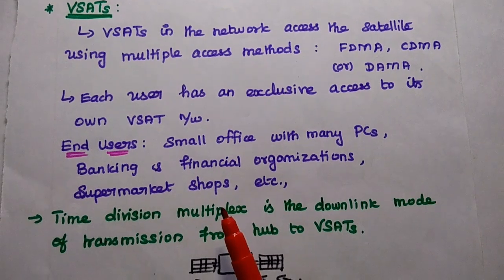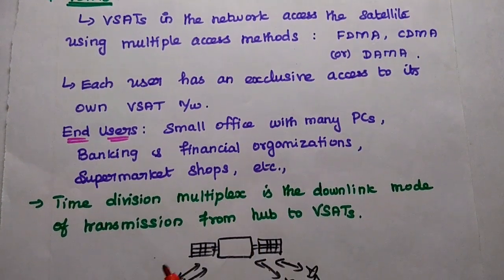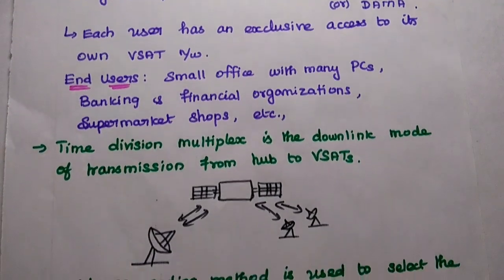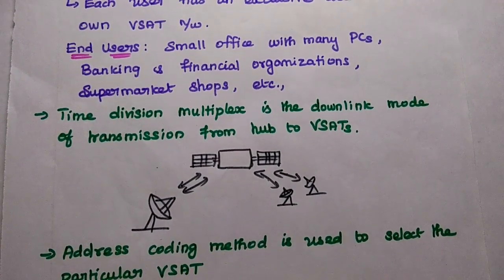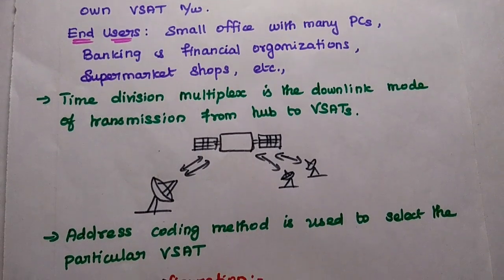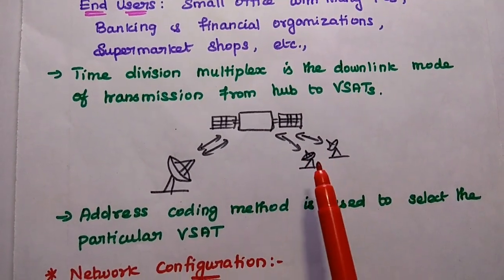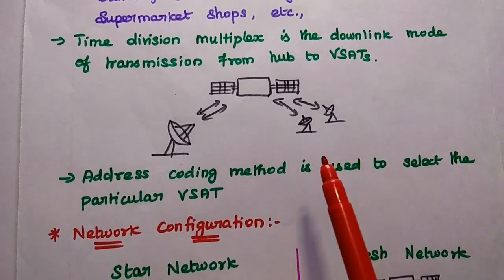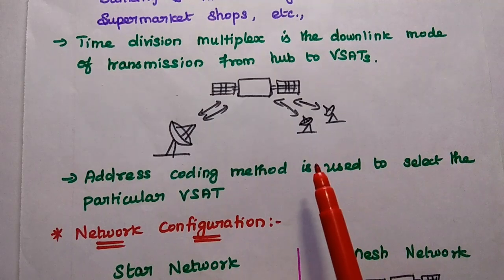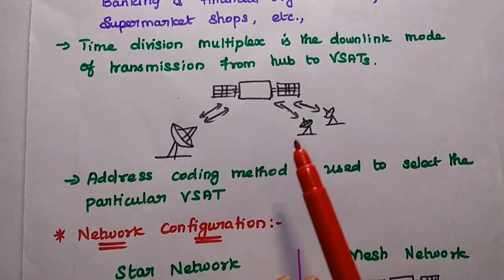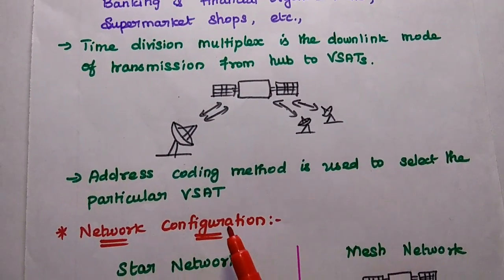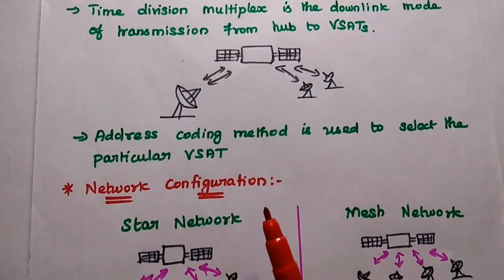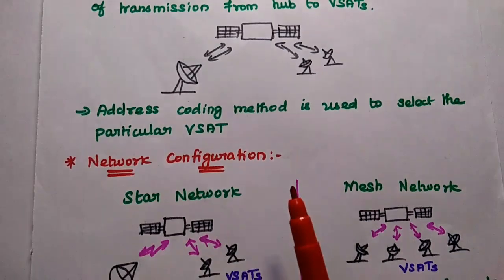End-users may be a small office with many PCs, banking and financial organizations, supermarket shops, and homes seeking satellite TV services. Time division multiplex method is used in the downlink mode to transmit the signal from the Hub to V-SATs. At the end-user site, a particular owned service is selected using a coding method, and address coding is used to select the particular V-SAT at the receiving site.